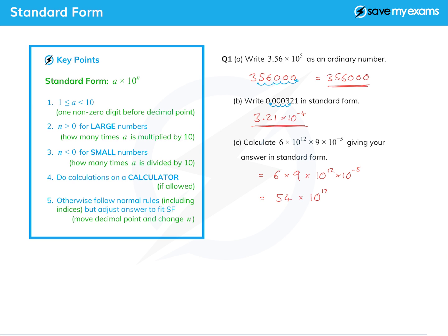So we get 10 to the power of 12 plus minus 5, or if you like, 12 minus 5. So that is 54 times 10 to the 7. But that's not in standard form because the number at the front here is not between 1 and 10, it's 54.